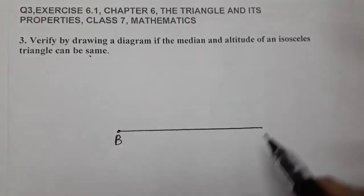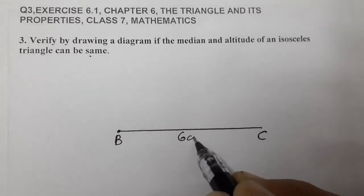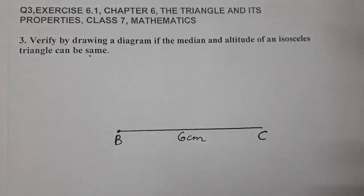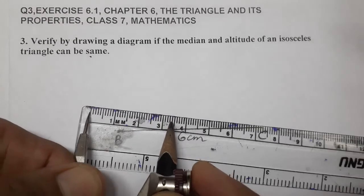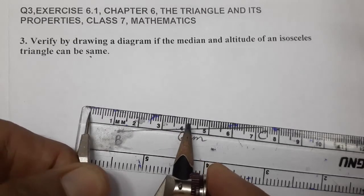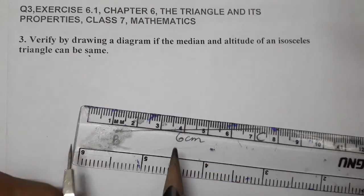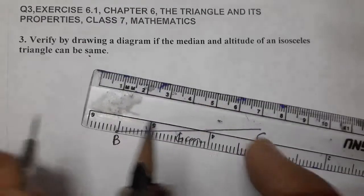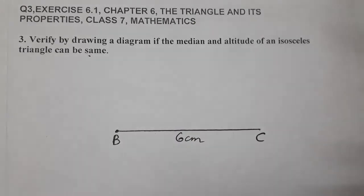We're giving the name BC. This is 6 centimeters in length. Now we have to make an isosceles triangle, so the other two sides are 4 centimeters each. We have to measure using compass and ruler 4 centimeters. This is 4 centimeters length. You can see 4 centimeters.